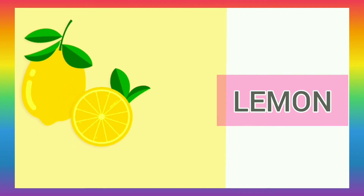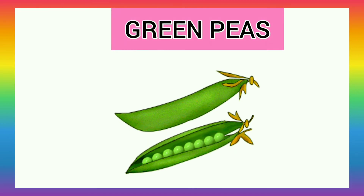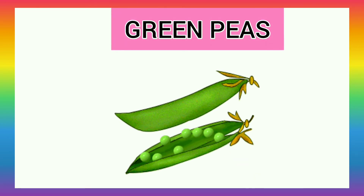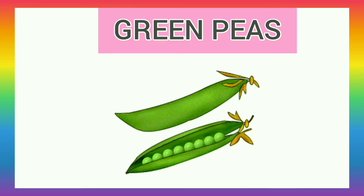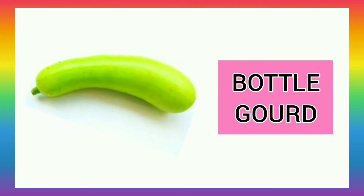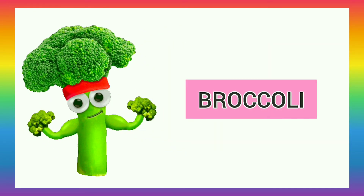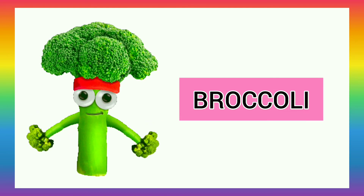D for Green Pea. B for Bottle Gourd. D for Broccoli.